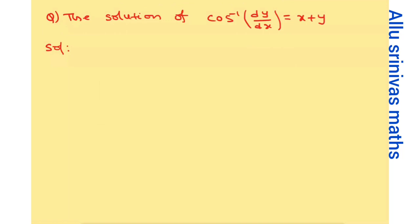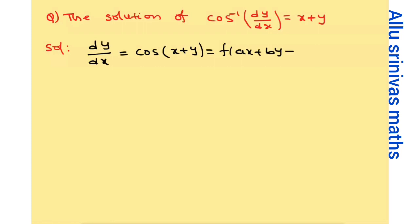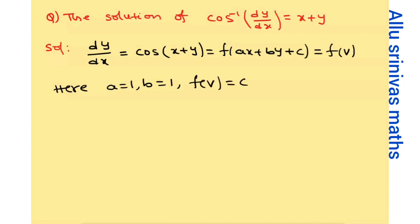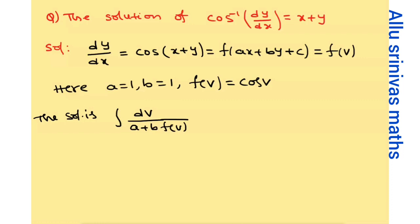The next problem: cos inverse of (dy/dx) equals x plus y. This is an indirect problem. Taking cos on both sides: dy/dx equals cos(x plus y). Using the f of (ax plus by plus c) formula, we compare and get a value equals 1, b value equals 1, and f of v equals cos v. The direct solution is the integral of dv by (a plus b·f(v)) equals x plus c.